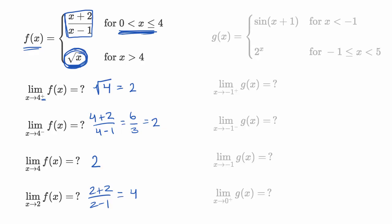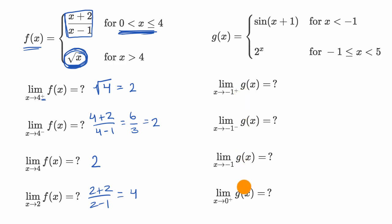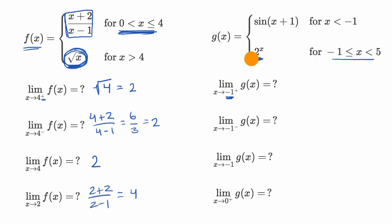Let's do another example. We have another piecewise function, so let's figure out these limits. What's the limit as x approaches negative one from the right? If we're approaching from the right, when we are greater than or equal to negative one we are in this part of our piecewise function. So this is going to approach two to the negative one power, which is equal to one half.